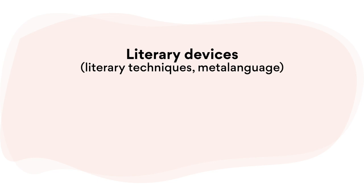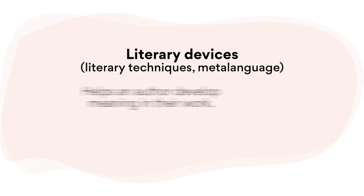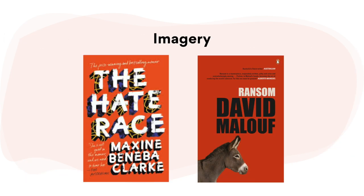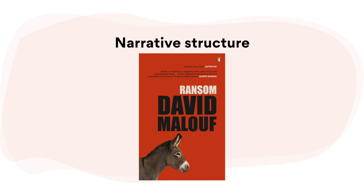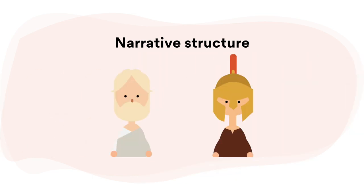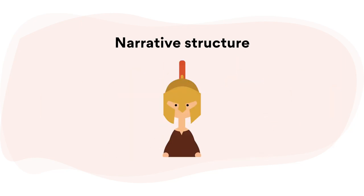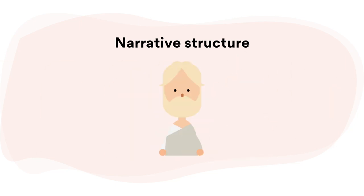Similarly, in novels, literary devices — also known as literary techniques or meta-language — help an author develop meaning in their work. These include imagery, used heavily in The Hate Race and Ransom, narrative structure, and more. For example, while Ransom is written in a third-person narrative voice, each chapter moves between different characters' points of view, from Achilles in the first chapter to Priam's in the next.